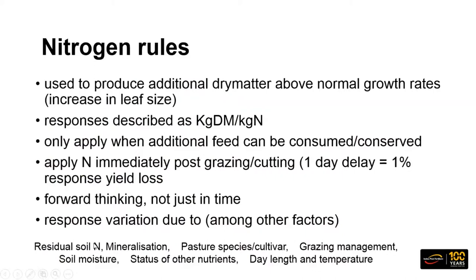There are a number of different things that affect how much of a response you get to nitrogen — whether that's 10, 15, or 20 kilograms of dry matter for every kilogram of nitrogen. Those factors include residual soil nitrogen, mineralisation rates (slower now but increasing as temperatures warm), species and cultivars, grazing management, soil moisture — which is absolutely critical — status of other nutrients, day length, and temperature. As day length and temperature increase and growth rates increase, so do responses to nitrogen.